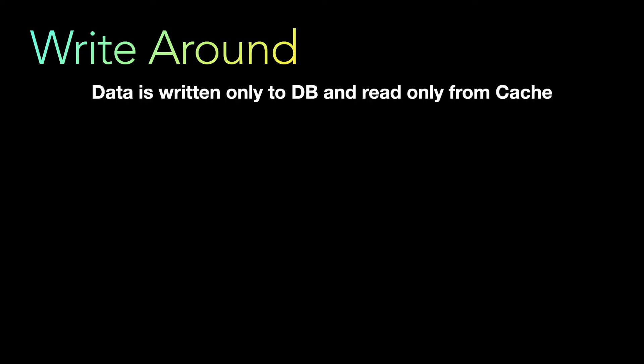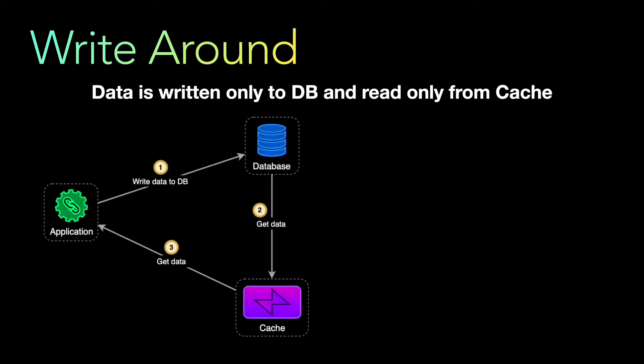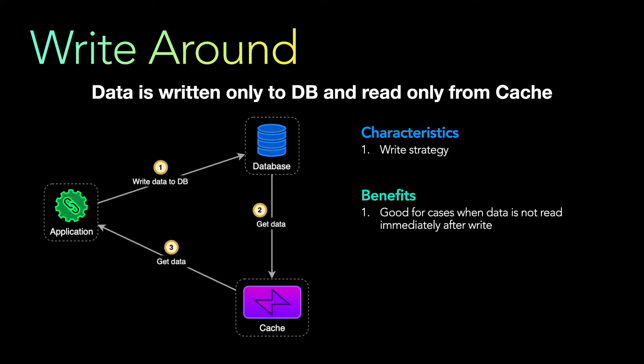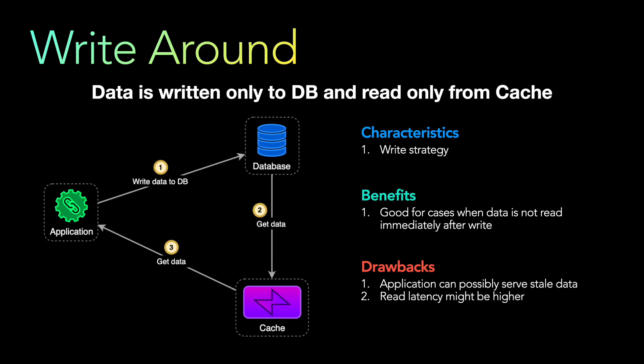The next pattern is the write-around pattern. Data is written only to the database and read only from the cache. The application writes data to the database, and whenever it reads data it reads from the cache, which is updated from the database. This works well for cases when data is not read immediately after the write. Drawbacks: the application can serve stale data, because if data is written to the database and immediately read from the cache before the cache is updated it causes a cache miss, and read latency may be higher as it takes time for the database to update the cache.